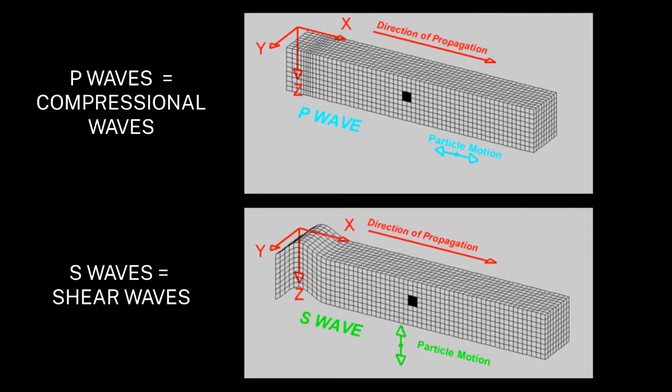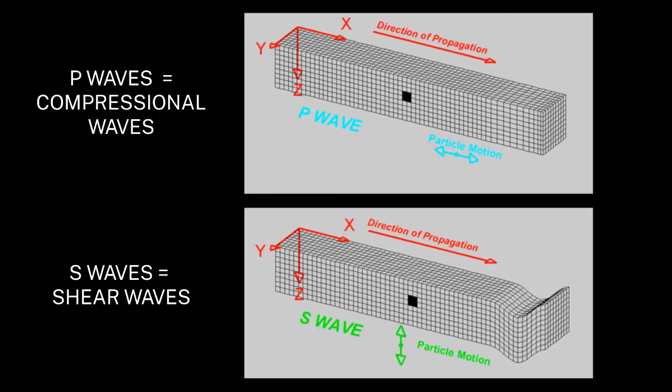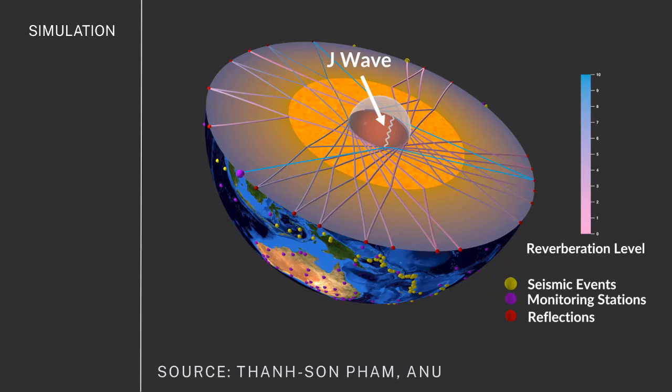Previously the focus was to detect shear waves in the inner core, because the detection of shear waves would be direct evidence that the inner core was indeed solid. Simply because shear waves can only propagate through solids — they don't propagate through liquids and plasma. The simplest manifestation of shear waves in the inner core is the so-called PKJKP wave, where J in the center stands for shear waves in the solid inner core.